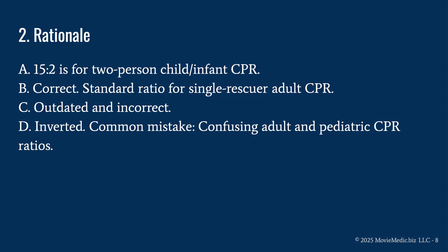The answer is B, 30 to 2. 15 to 2 is for two-person child/infant CPR — know your ratios. The standard ratio for a single rescuer adult CPR is 30 to 2. C is outdated and incorrect and D is inverted. The common mistake here is confusing adult and pediatric CPR ratios, so go and review your CPR ratios for single and double rescuer.